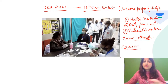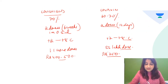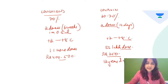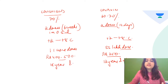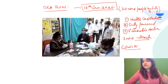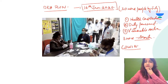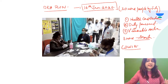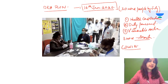One more point: Covaxin can be used in persons 12 years and above, while Covishield is being used in persons 18 years and above. The government is also targeting 3 crore vaccine doses by end of March. These are some of the key facts about the ongoing COVID vaccines and COVID vaccination drive in India.